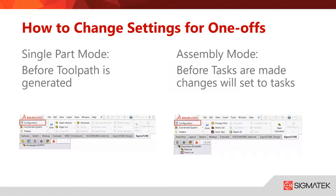If you are unsure what your defaults should be you can easily change them on the fly by clicking the configuration button at the top left corner. Here you will be able to make changes that you will only apply to this current part or this current assembly's task. Please note in assembly mode to make the change before clicking auto task, otherwise your change may not go through.